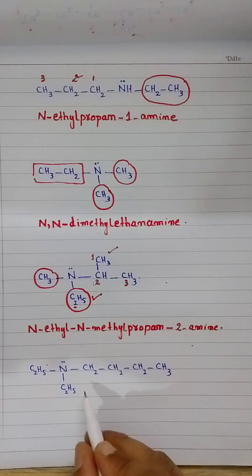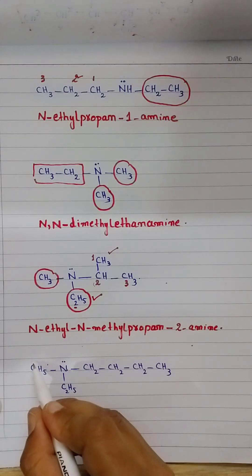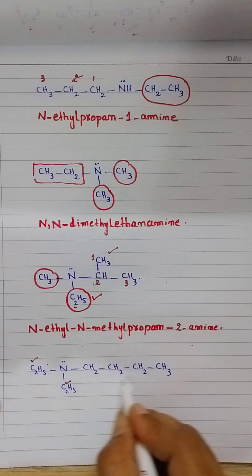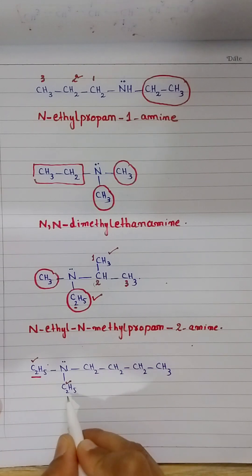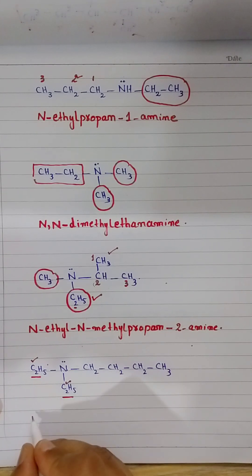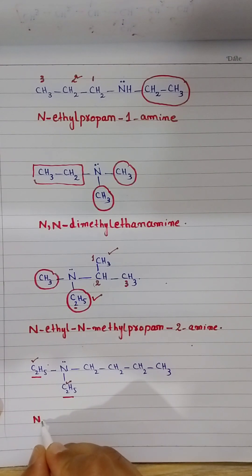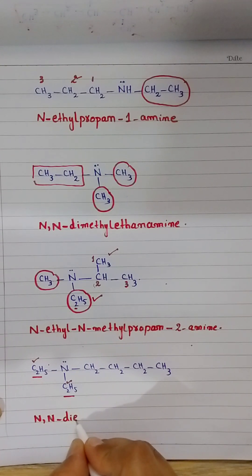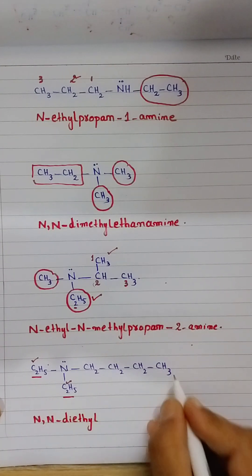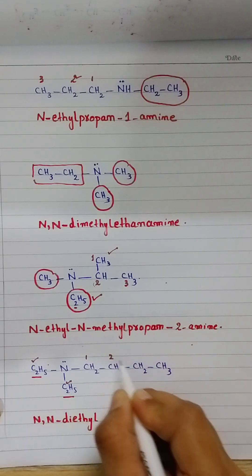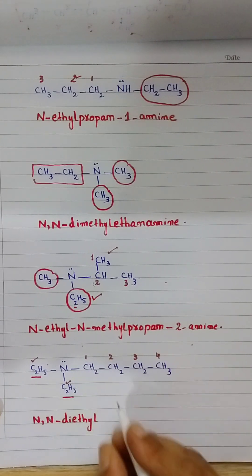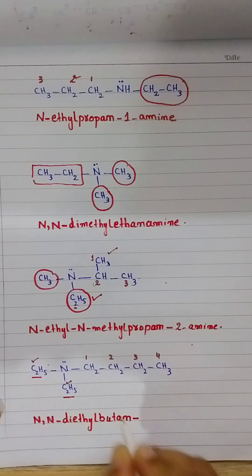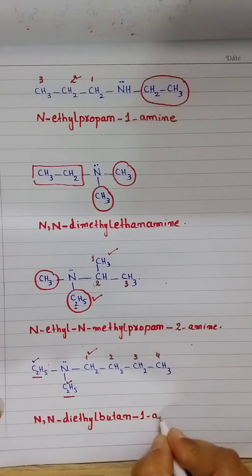Next example is again tertiary amines containing 3 alkyl groups: two-carbon ethyl, two-carbon ethyl, and four-carbon butyl. The bigger alkyl group, butyl, is selected for the end name. The two ethyl groups — both attached to nitrogen and similar — are written as N,N-diethyl. The four-carbon chain is butane. Since the chain has more than 2 carbons, numbering is done from the amino group side. The amino group is at position 1. Name: N,N-diethylbutan-1-amine.